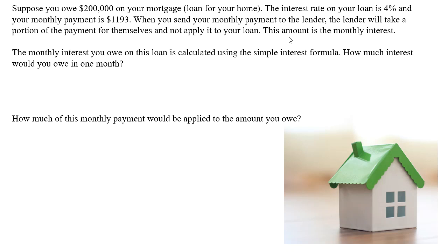How do we calculate this interest? The monthly interest you owe on this loan is calculated using the simple interest formula. How much interest would you owe in one month? We'll see that this value will change month to month. The simple interest formula is: Interest = Principal × Rate × Time. In this case, the four percent is an APR. Unless otherwise specified, most interest rates on homes are annual percentage rates.